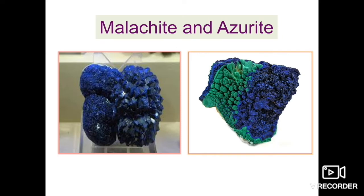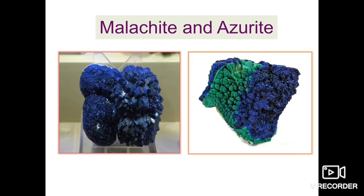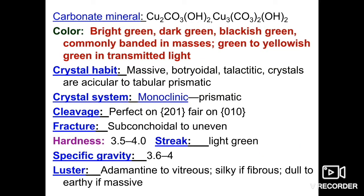The next ones are malachite and azurite. As you can see in the diagram, the left-hand side is malachite and the right-hand side is azurite. Malachite is green and azurite is a mixture of blue and green. These are carbonate minerals. The formulas are Cu2(CO3)(OH)2 for malachite and Cu3(CO3)2(OH)2 for azurite.